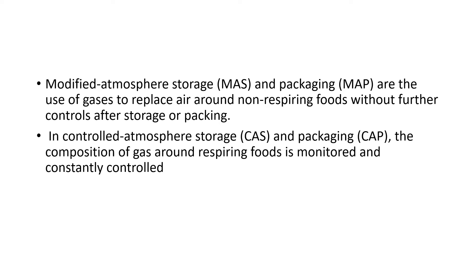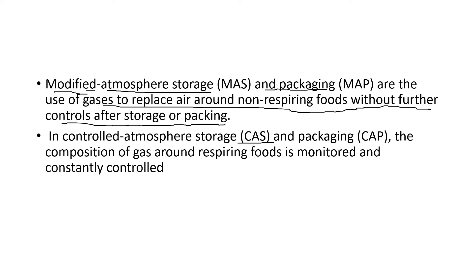As mentioned earlier, MAP and CAS — modified atmosphere storage and packaging — are the use of gases to replace air around non-respiring foods without further controls after storage or packaging. In controlled atmosphere storage and packaging, the composition of gas around respiring food is monitored and constantly controlled. Different types of gases are used in food packaging to prevent the growth of microorganisms, replacing air in most cases.